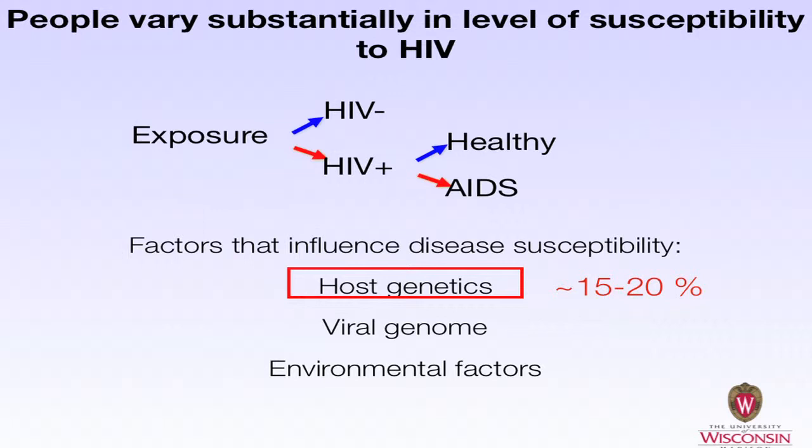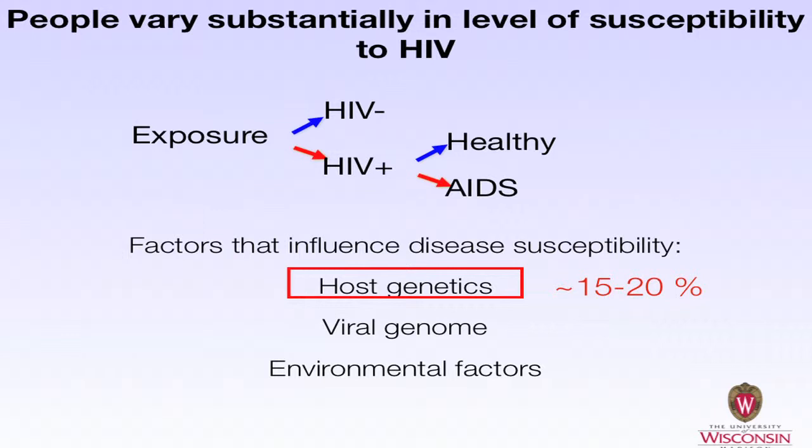It appears that about 15 to 20 percent of the influence can come from host genetics. Today I'm going to focus this talk on four major areas: polymorphisms that prevent viral entry, focusing on CCR5; polymorphisms in the human leukocyte antigen, or HLA; polymorphisms in the killer cell immunoglobulin-like receptors; and finally some genomic approaches.